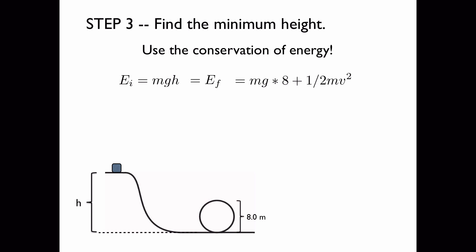The block is at a height 8 meters above the ground, so it has gravitational potential energy mg*8, and it has kinetic energy 1 half mv squared.